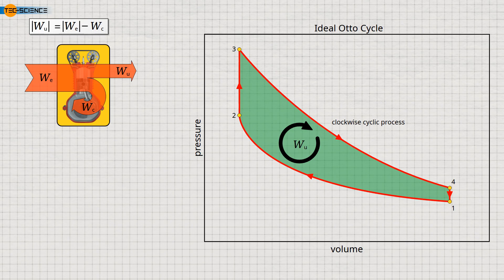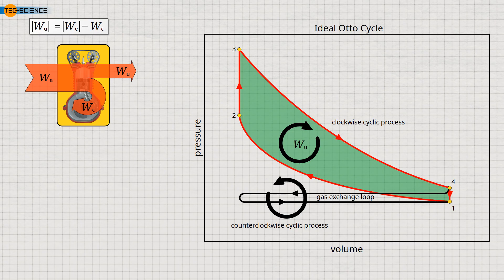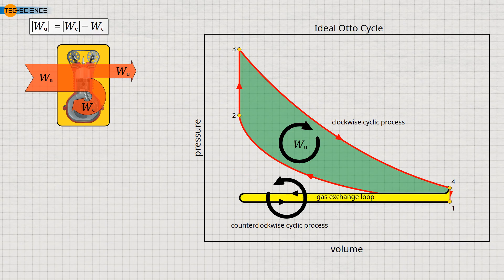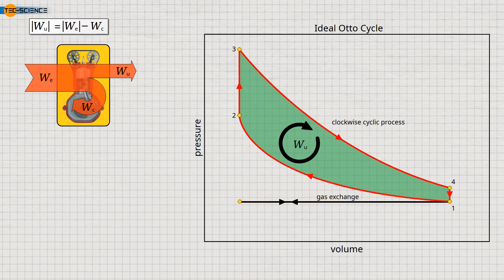Let's briefly reconsider the neglected gas exchange loop. Essentially, the charge exchange forms a counterclockwise cyclic process, which runs in the opposite direction. In this case, the expansion curve during the intake lies below the compression curve during the exhaust. For the exhaust, the gas must perform more work than the environment does during the intake. As a counterclockwise cyclic process, work must be done during the charge exchange, corresponding to the enclosed area within the charge exchange loop. However, in the idealized thermodynamic cycle of the gasoline engine, intake and exhaust are at the same pressure, so there is no actual charge exchange loop and therefore no work to be done for charge exchange.